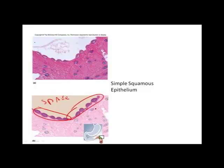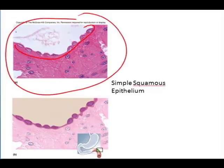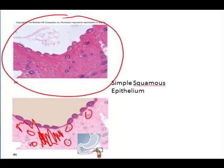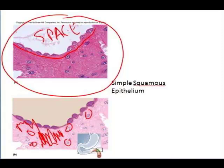Squamous because of their shape, and simple because there's only one layer. These are the squamous cells, the epithelium, and all under here is connective tissue. So again, a single layer of flat, tile-shaped cells on the surface, lining that space. That is classic for simple squamous epithelium.